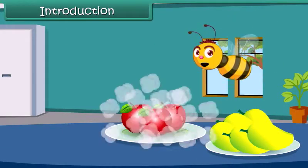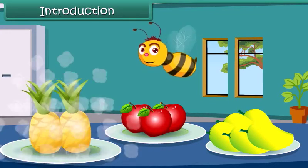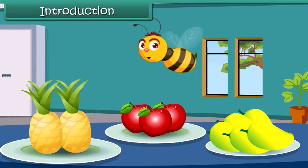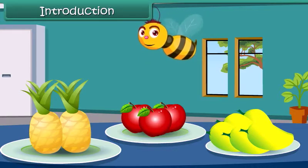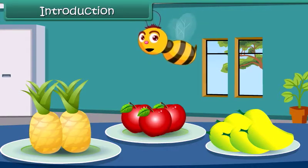Hello friends, here you see some fruits are kept on the table. We have 5 mangoes, 3 apples and 2 pineapples. Describing in this manner is called data representation.